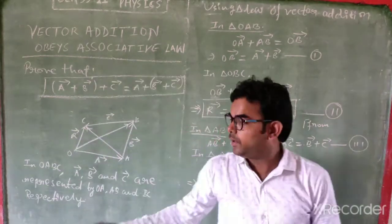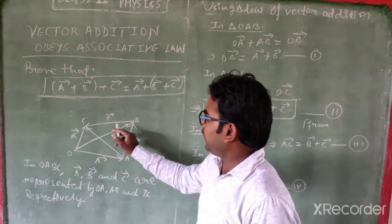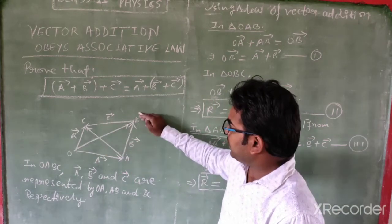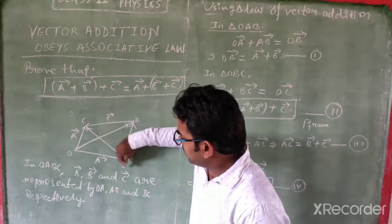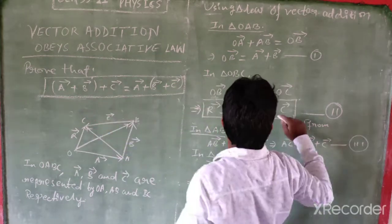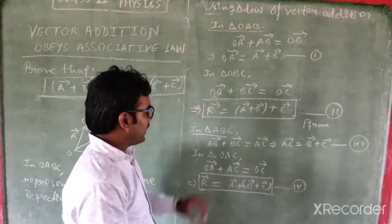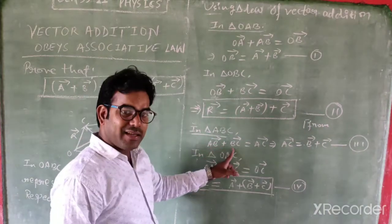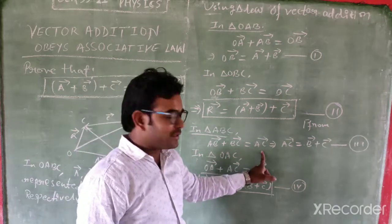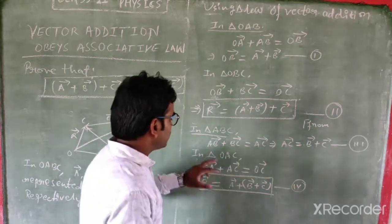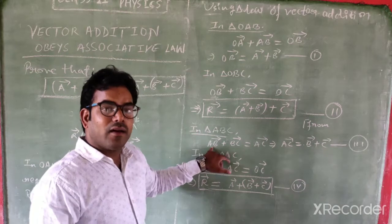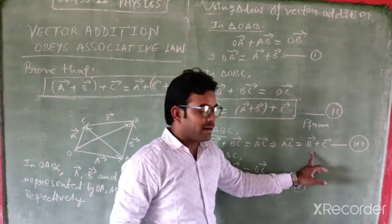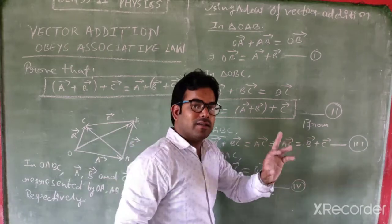In triangle ABC, vector B plus vector C is equal to vector AC. That means vector AB plus vector BC is equal to vector AC. So vector AC is equal to vector B plus vector C. This is equation number three.